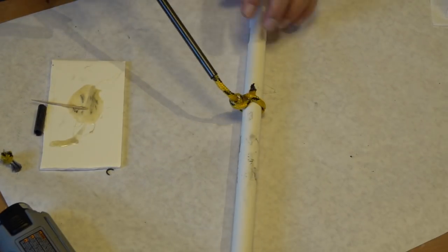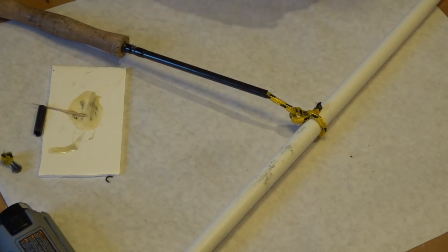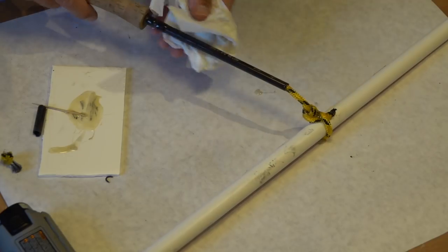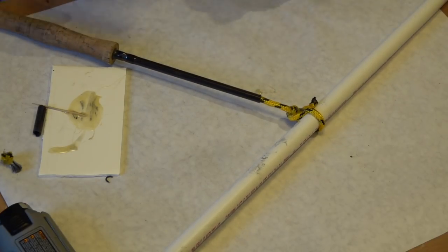Now if you get a bunch of epoxy places where you don't want it you can clean it up with a little acetone. I don't think this is too bad. Make sure I haven't gotten any on the cork grip. Everything looks pretty good. We're going to let that set for just a little bit and then we'll come back and see how we did.